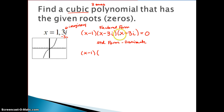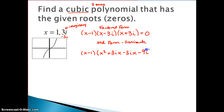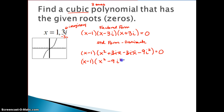x times x is x squared. x times 3i gives plus 3ix. Then negative 3i times x gives negative 3ix. And negative 3i times positive 3i: negative times positive is negative, 3 times 3 is 9, and i times i is i squared. I still have x minus 1 out front. Those middle terms cancel, so I'm left with x squared minus 9i squared equals 0. From Chapter 5, remember that i squared equals negative 1 — this is important.